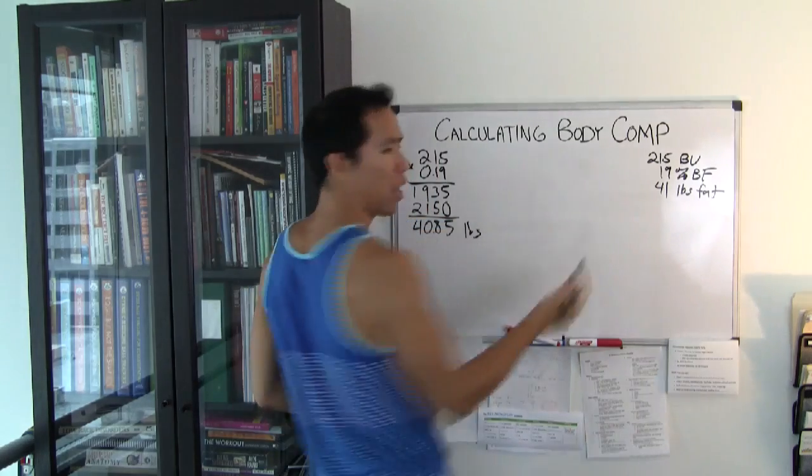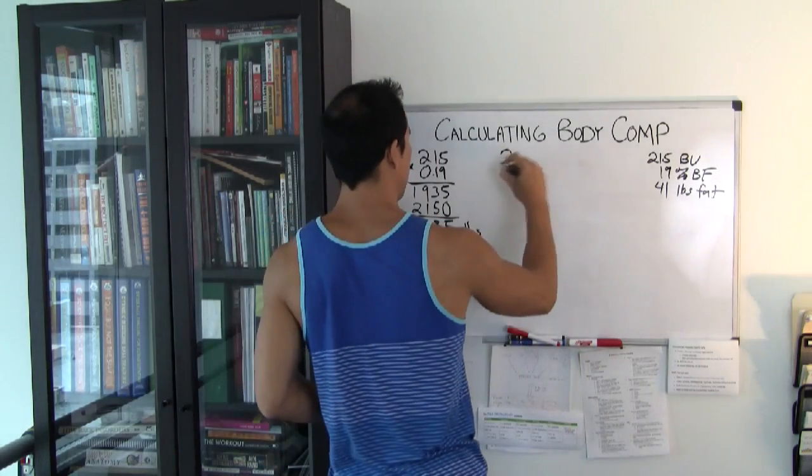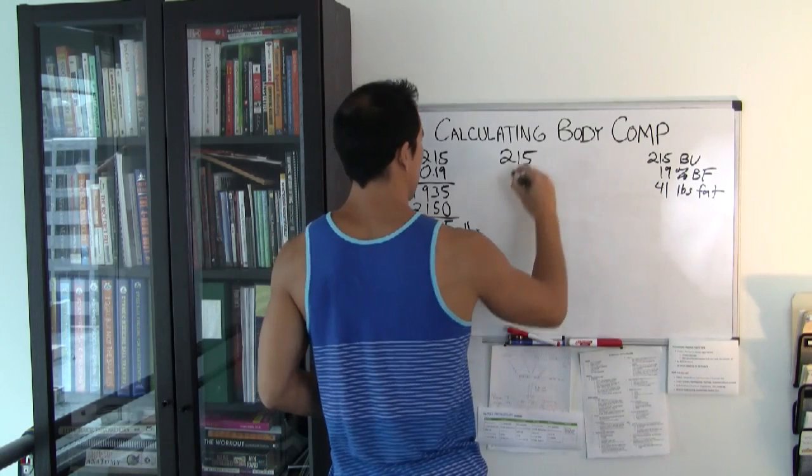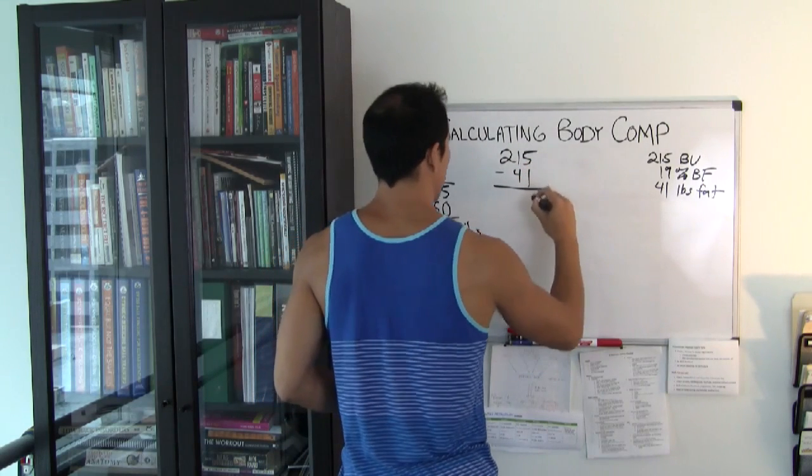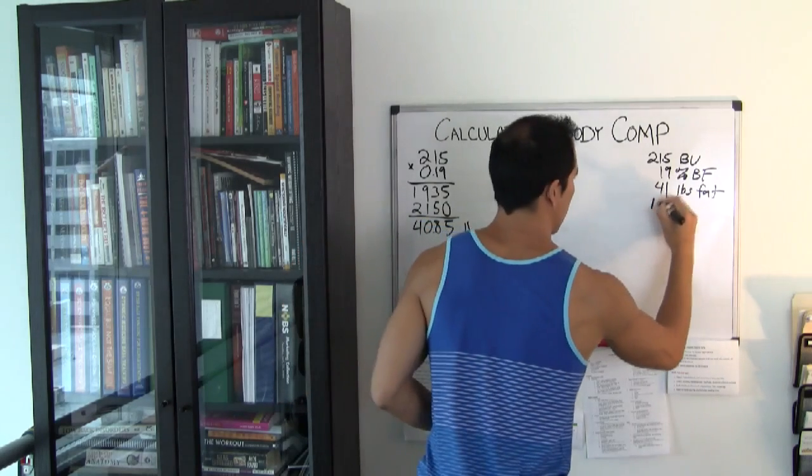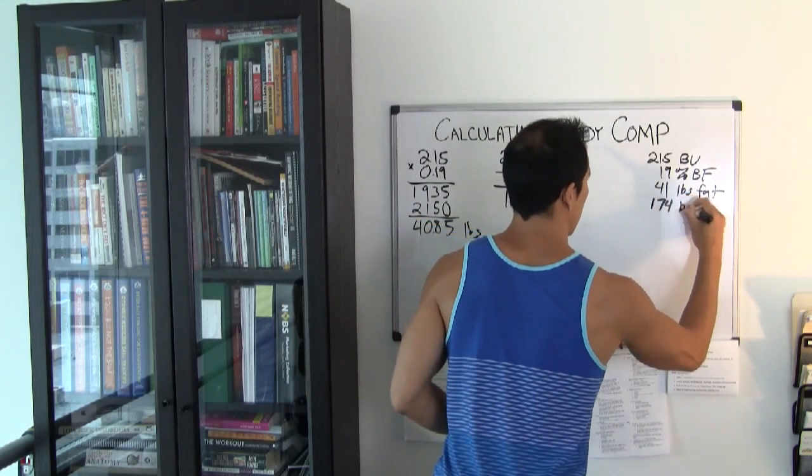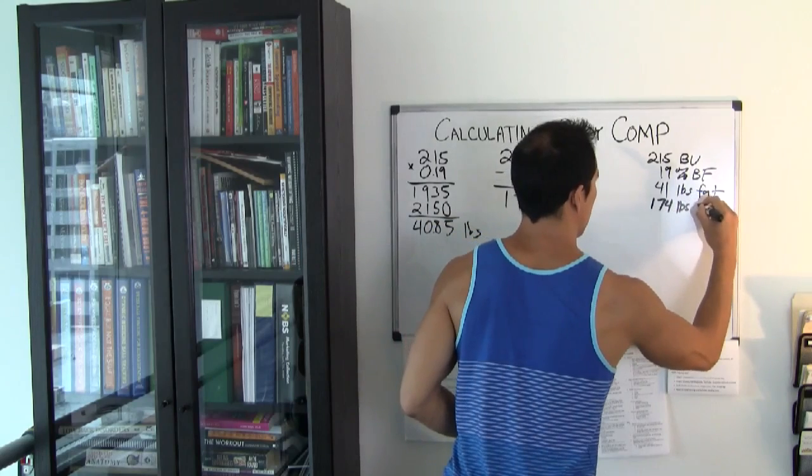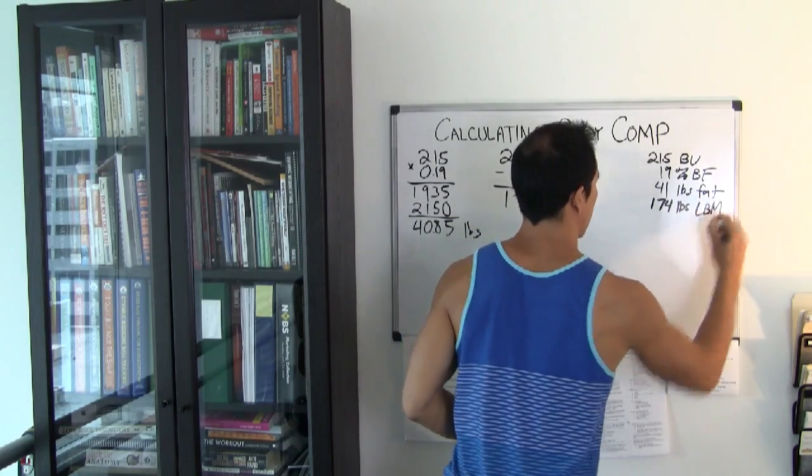Now, to figure out how much lean mass, you just subtract that from the total weight. So 215 minus 41 gives us 174 pounds of lean body mass.